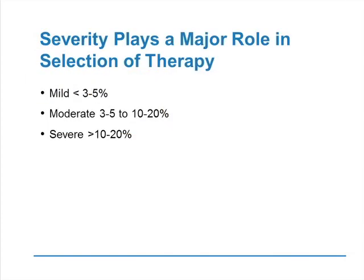The degree of severity a patient starts out with largely determines whether they are mild, moderate, or severe, and largely determines what treatments we'll give. If a patient has less than 3% to 5% of body surface area affected, that is usually mild. If they have anywhere from 3-5% up to 10-20%, that patient would be considered as having moderate psoriasis. Patients who have more than 10-20% body surface area are considered as having severe psoriasis.